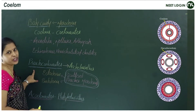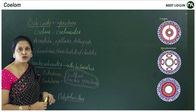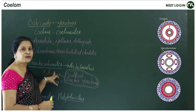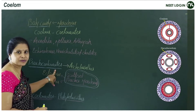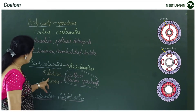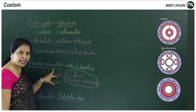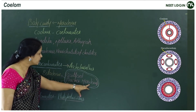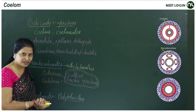Moving on to pseudocoelomates. Pseudo means false — they have a false coelom. In pseudocoelomates, there is a cavity present between the ectoderm and endoderm, but the mesoderm is scattered in the form of pouches rather than lining the cavity.